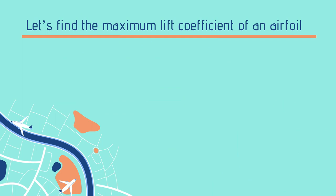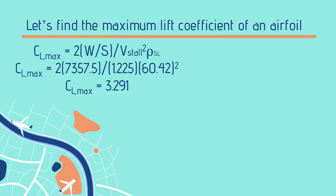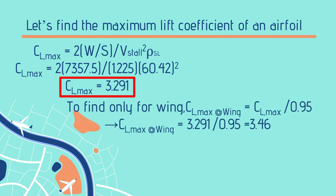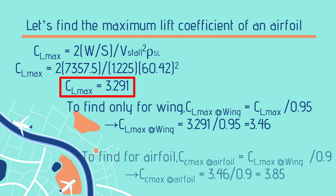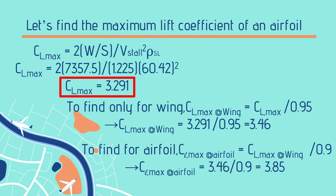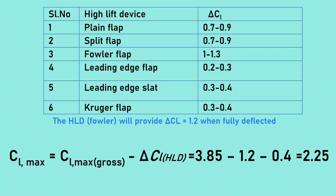To find the maximum lift coefficient: CL_max = 2(W/S) / (ρ_sea-level × V_stall²). Substituting wing loading of 7357.5 N/m², sea-level density of 1.225 kg/m³, and V_stall of 60.42 m/s gives CL_max = 3.291. For the wing: CL_max / 0.95 = 3.46, and for the airfoil: divided by 0.9 gives 3.85. Recalling the Fowler-type flap when fully deflected, the CL_max without high-lift devices is 2.25.